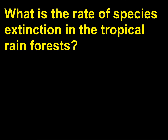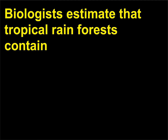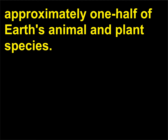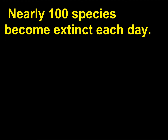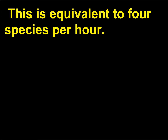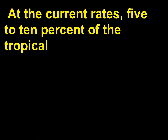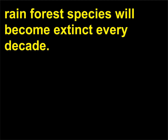What is the rate of species extinction in the tropical rainforests? Biologists estimate that tropical rainforests contain approximately one half of Earth's animal and plant species. These forests contain 155,000 of the 250,000 known plant species and innumerable insect and animal species. Nearly 100 species become extinct each day — equivalent to 4 species per hour. At current rates, 5 to 10% of tropical rainforest species will become extinct every decade.